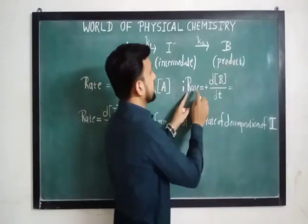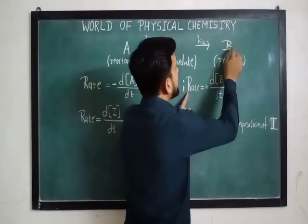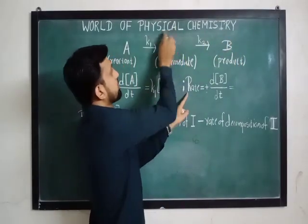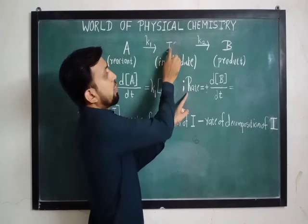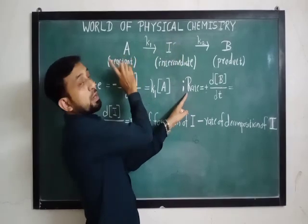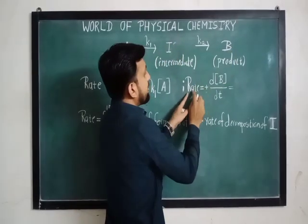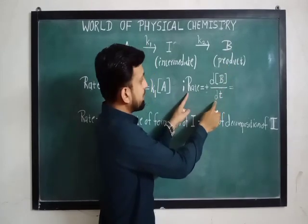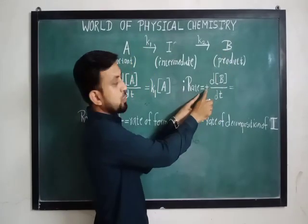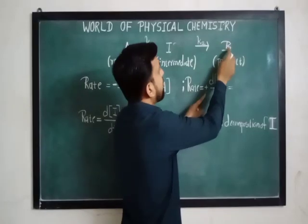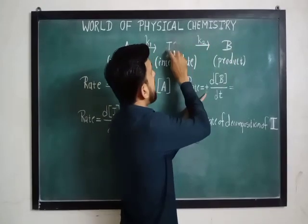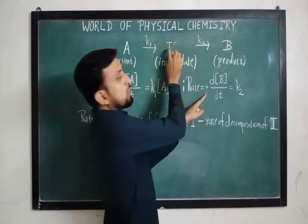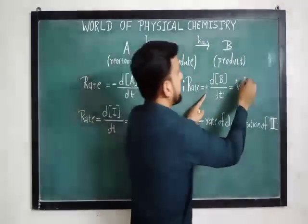For product B, B is forming from the intermediate I — it depends on the concentration of the intermediate, not on the reactant. So we write: rate equals d[B]/dt. Since B is forming we put a positive sign: K2 times the concentration of I, where K2 is the rate constant and the formation depends on the concentration of the intermediate.